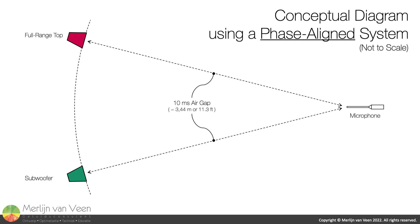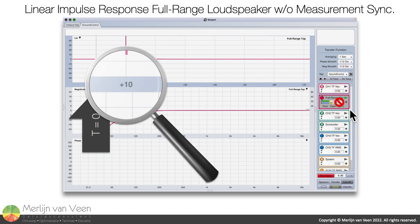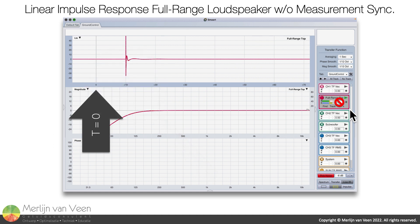Let's use a dual-channel transfer function analyzer to observe these loudspeakers' impulse responses. Starting with the full-range loudspeaker, without synchronizing measurement and reference signals, we can confirm that the loudspeaker's response to an impulse is indeed late by 10 milliseconds worth of airborne propagation time, in accordance with the physical air gap between loudspeaker and measurement microphone.